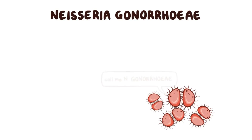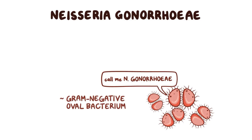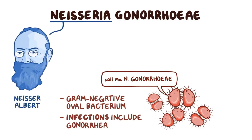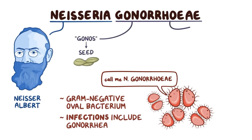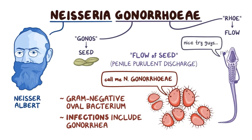Neisseria gonorrhoeae, also known as N. gonorrhoeae to its friends, is a gram-negative oval bacterium that infects humans, causing a number of infections including gonorrhea. The word Neisseria comes from Albert Neisser, a German physician who discovered it, while gonorrhea is from the Greek words gonos, which means seed, and rho, which means flow — meaning flow of seed, an illustration referring to the penile purulent discharge, which was mistakenly thought to be semen in infected males.